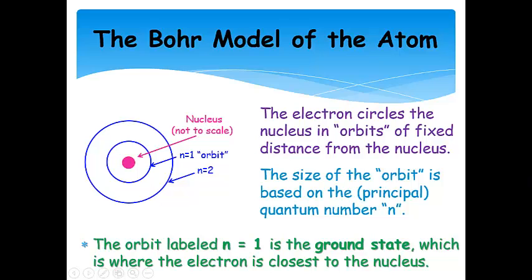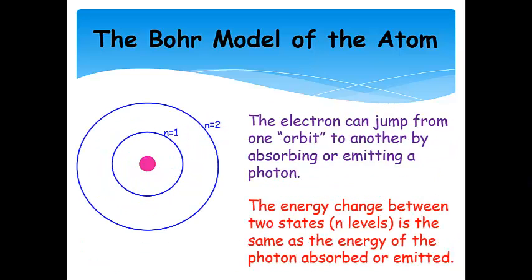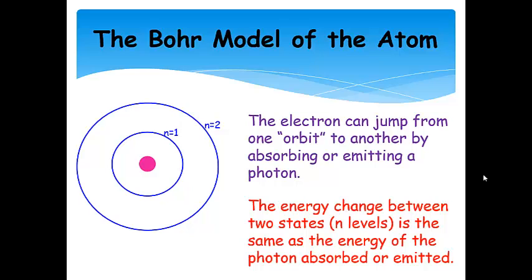The n equals 1 orbit is the ground state. That's where the electron is closest to the nucleus, and so this is the most stable place for the electron to be. When an atom absorbs a photon, the electron can move from n equals 1 to a higher orbit. If the electron is already in a higher orbit, it can emit a photon and drop back to the ground state. The energy it takes to go from one to the other is the difference in energy between the two n levels that the electron moves between, and it's also the same as the energy of the photon absorbed or emitted — so they have to match.